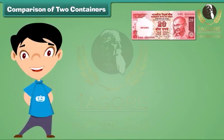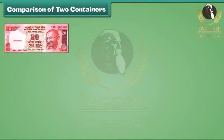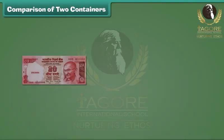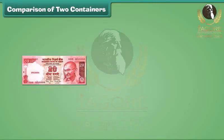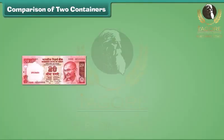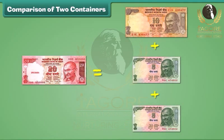This is a 20 rupee note. A 20 rupees note is equal to the sum of four 5 rupee notes. A 20 rupees note is equal to the sum of two 10 rupee notes. A 20 rupees note is also equal to the sum of one 10 rupee note and two 5 rupees notes.